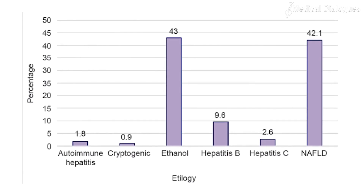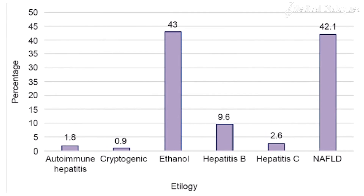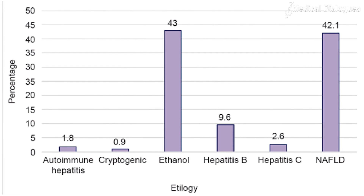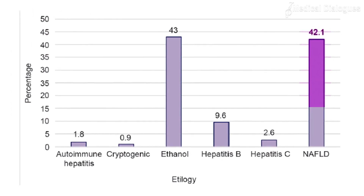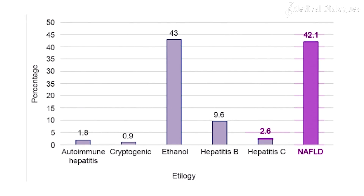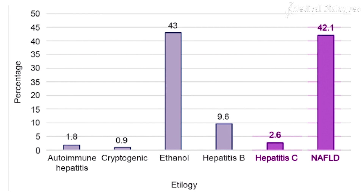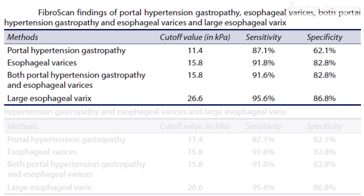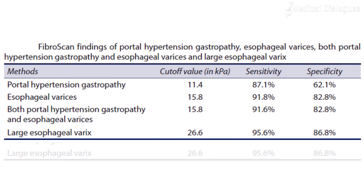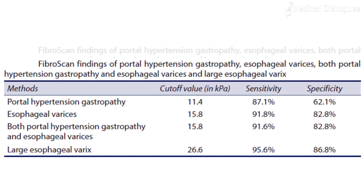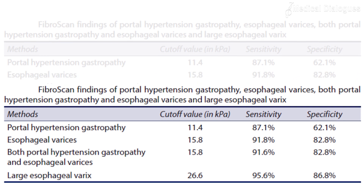The results showed that alcoholic liver disease was the most common cause of chronic liver disease, closely followed by non-alcoholic fatty liver disease in 42% of the cases, followed by chronic viral hepatitis. 75% of the patients had evidence of portal hypertension. The study therefore concluded that FibroScan was found to be more sensitive and specific to detect portal hypertension and its various endoscopic manifestations.